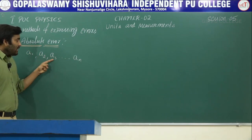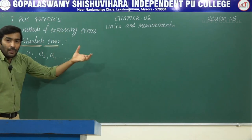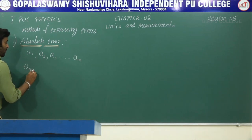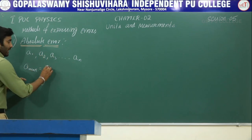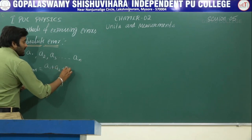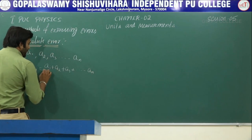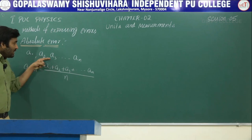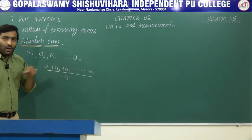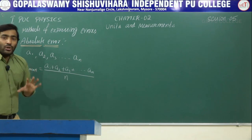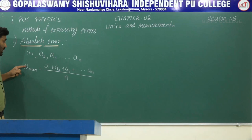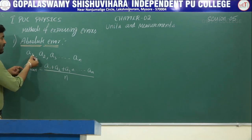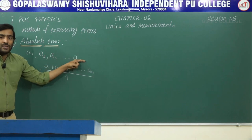A1 is the first measurement, A2 is the second measurement, A3 is the third measurement, and An is the nth measurement. They are all called the measured values. Now let me take the mean value of these measurements — A mean. A mean is the average of all these measurements: A1 plus A2 plus A3, up to An, whole divided by n. This is the mean value.